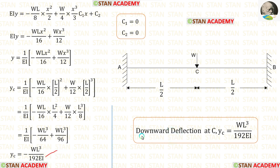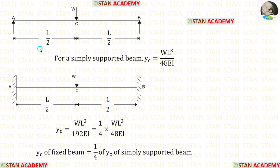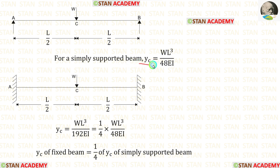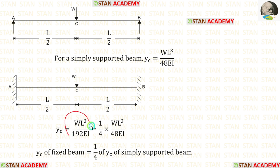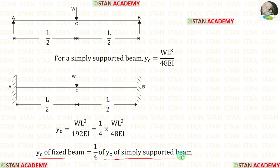The negative value means it is downward deflection. For comparison, in a simply supported beam with a point load at the center, the deflection at the center YC is WL³/48EI. For the fixed beam, the deflection is WL³/192EI, and since 192 = 4 × 48, the deflection of the fixed beam is 1/4 of that of the simply supported beam. Thank you for watching this video.